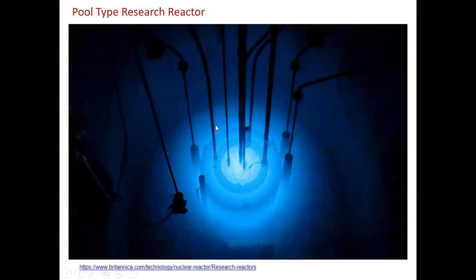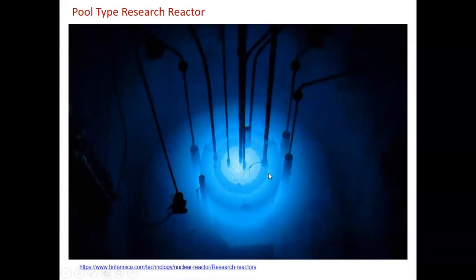When the pool-type research reactor is operating at power, it has a bluish glow around the reactor core — a whitish-blue color emitted from charged particles creating Cherenkov radiation.